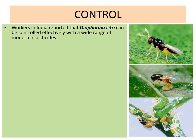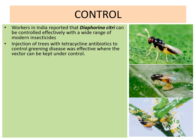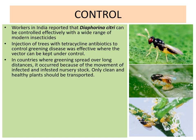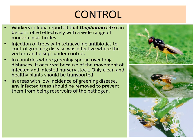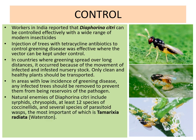Control: Workers in India reported that Diapherina citri can be controlled effectively with a wide range of modern insecticides. Injection of trees with tetracycline antibiotics to control greening disease was effective where the vector can be kept under control. In countries where greening spreads over long distances due to movement of infected and infested nursery stocks, only clean and healthy plants should be transported. In areas with low incidence of greening disease, any infected tree should be removed to prevent it from being a reservoir of the pathogen.